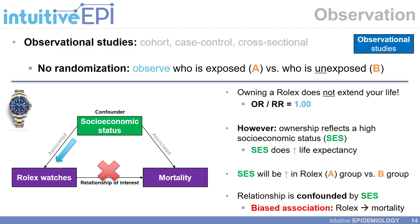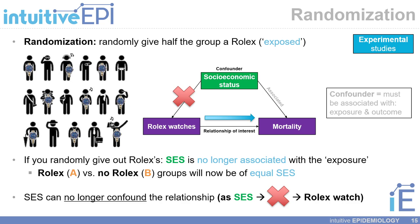If we estimate the relationship between these two variables without considering confounding, we would have a biased association. In the case of randomization or experimental studies — where you randomly give half of your participants a Rolex and the other half do not — you break the link between socioeconomic status and Rolex watches. SES is no longer associated with owning the watch because they were given out at random, so the exposed and unexposed groups will be of equal SES and SES can no longer confound the relationship.